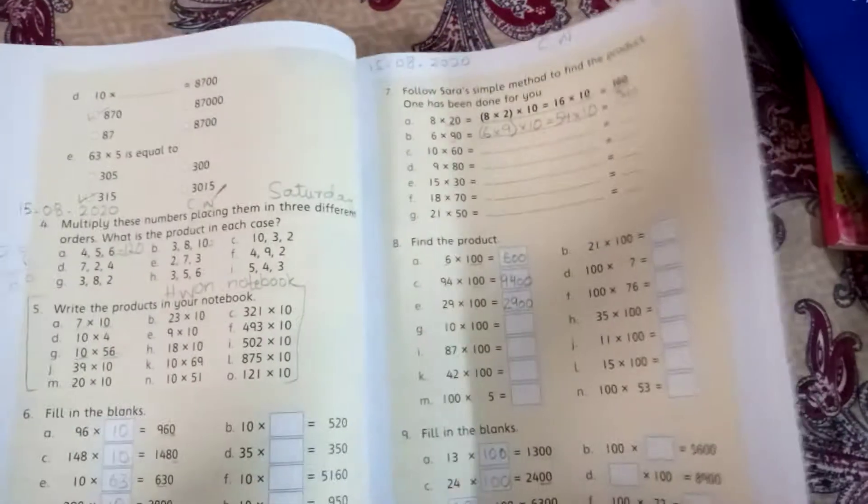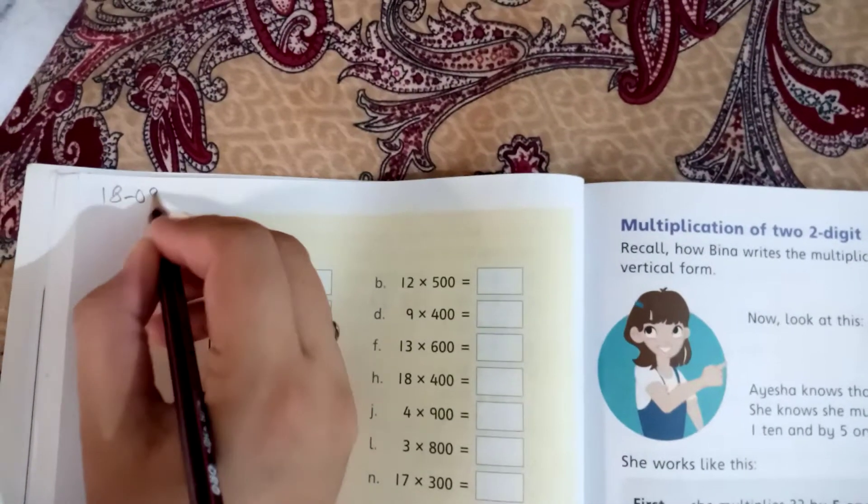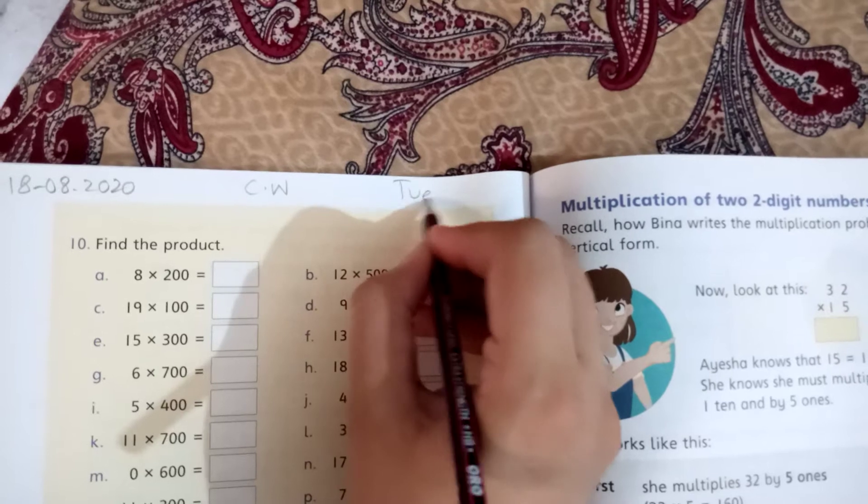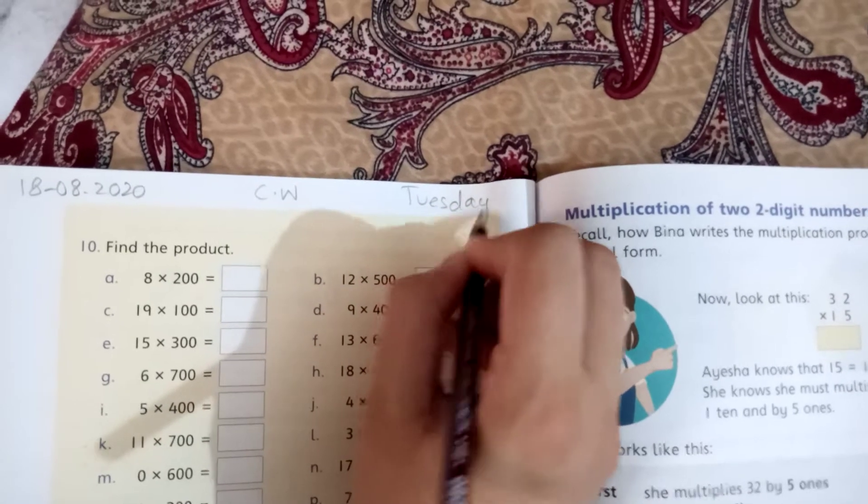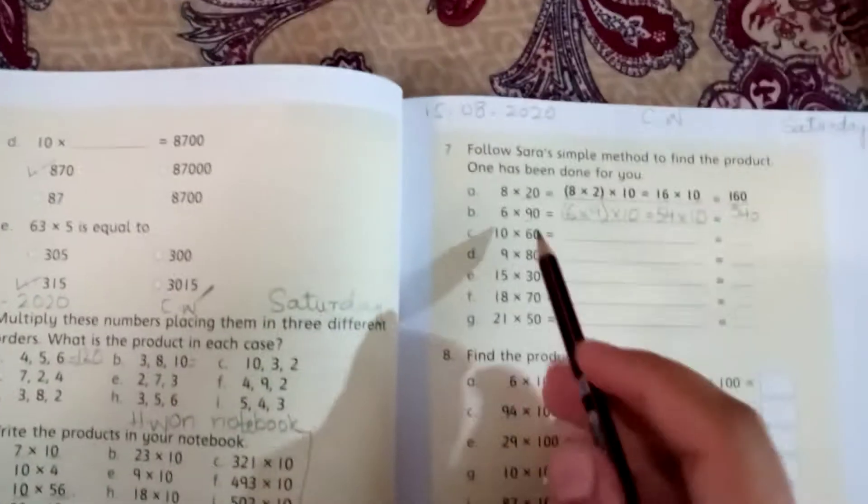After doing this homework, then you will turn to page number 72. You will write date on this page: 18, 8, 2020, classwork and then day is Tuesday. This is the page. I have done this.